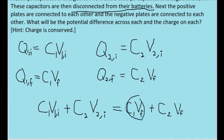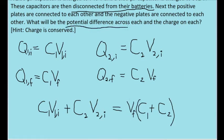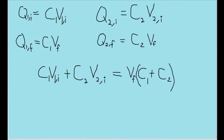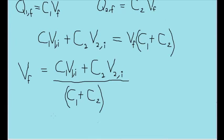Notice that since the VF variable is shared among both of these terms, it can be factored out. The potential difference across each capacitor is the first thing that the problem asks us to find. So let's take our equation and solve it for V sub F by dividing both sides of the equation by C1 plus C2. This is our final equation that we'll use.